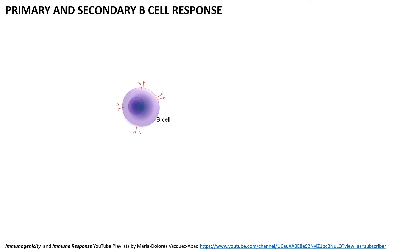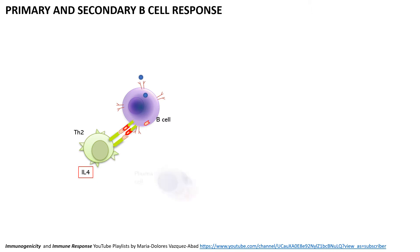The B-cell response is basically triggered by either an allergen or an antigen, and a drug that's immunogenic is perceived as an antigen by the B-cell, which will be identified through the B-cell receptors. The B-cell then will internalize and metabolize that antigen and present the specific T-cell epitope of that antigen to the T-cell, differentiating it into a Th2 with production of interleukin 4.